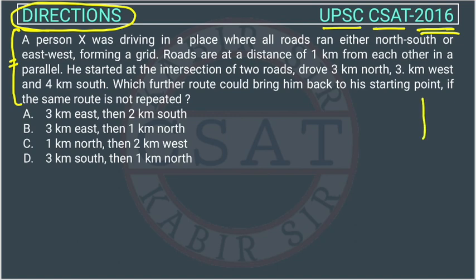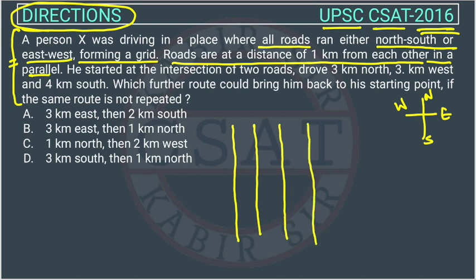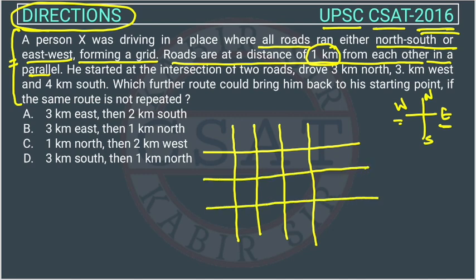Whenever we have a direction question, we set up: this is north, this is south, this is east, and this is west. Person X was driving in a place where all roads run either north-south or east-west, forming a grid. Roads are at a distance of one kilometer from each other in parallel. So roads are running north-south like this, or they are running east-west. They are forming a grid.